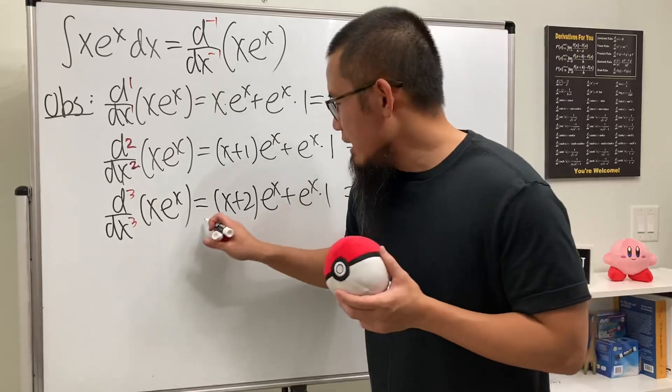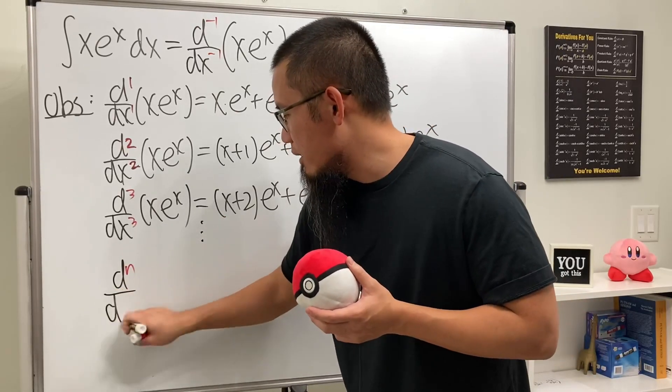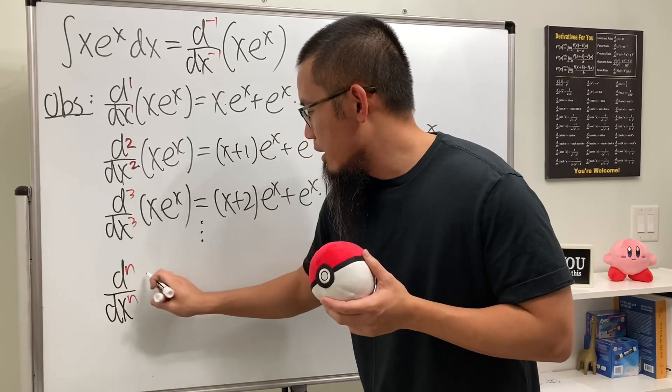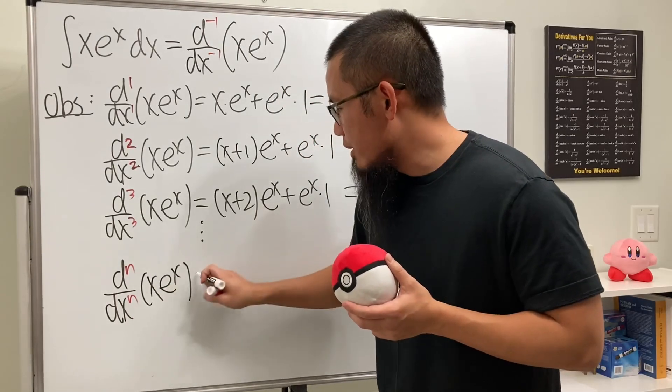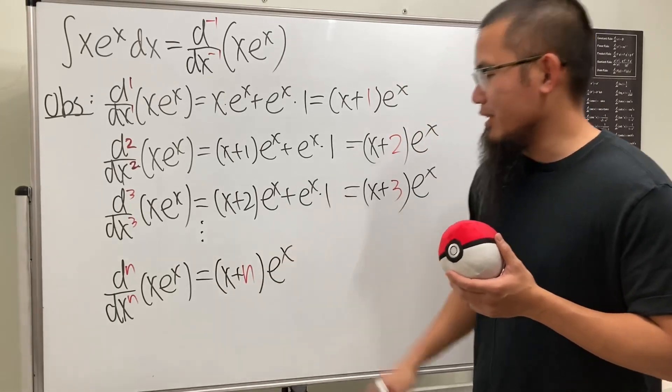So, you see that if this keeps on going, we have d^n, meaning the nth derivative. Alright, this right here, which is (x+n) and then times e^x.